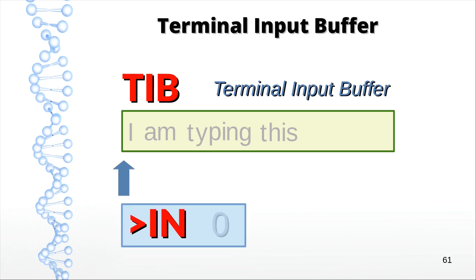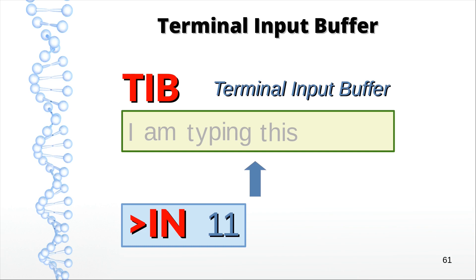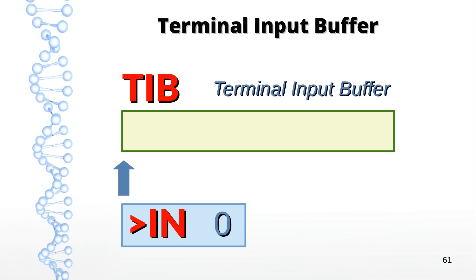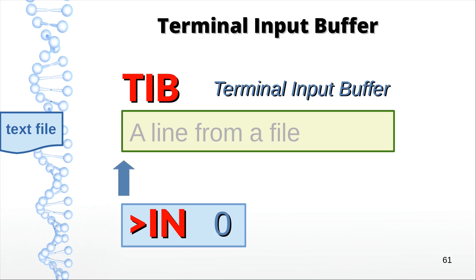Initially IN holds zero. But when we issue a word like parse or word, it will increment, pointing to the position just after the token we parsed. ForthDH is different — it uses the TIB for reading text files. When refill is called, it reads an entire line from the text file and places it in the TIB. If a line is too long, it reads up to the full capacity of the TIB and reads the remainder on the next call to refill. But you can parse the TIB as easily as if you typed in the line yourself.